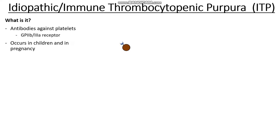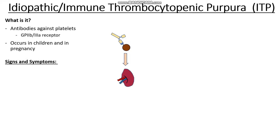We have a platelet and in blue we can see our GP2B3A receptor. In immune thrombocytopenic purpura, we have an antibody formed against that receptor. This antibody-platelet complex is too large to pass through the spleen and therefore it's broken down, resulting in fewer platelets in our blood.